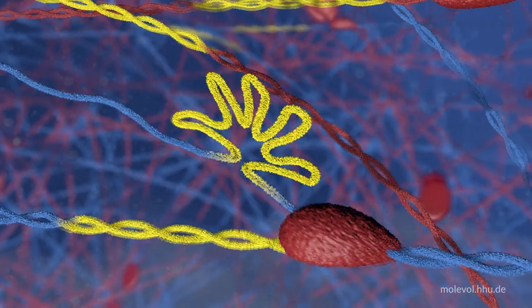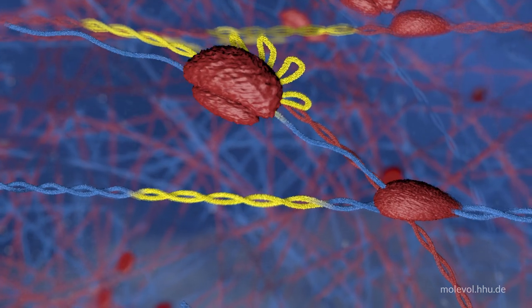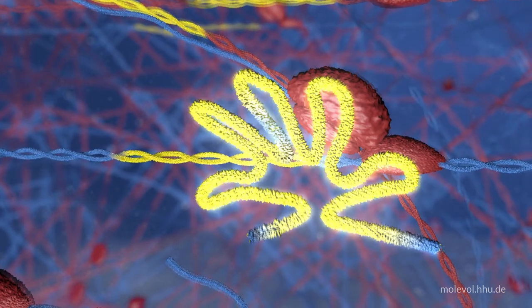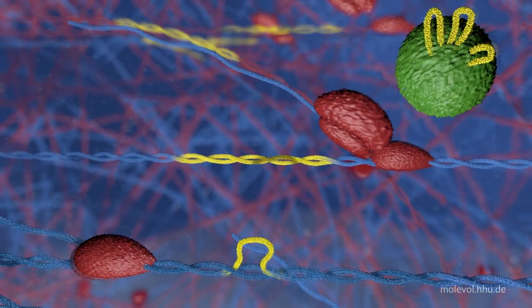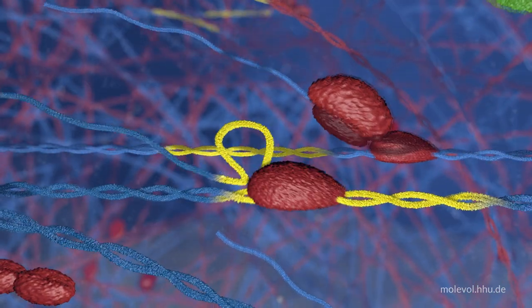But during eukaryote origin, these group 2 introns underwent a fateful transition. They fragmented into smaller introns and splicing machines called the spliceosome, shown here in green. The transition to spliceosomes had a huge consequence. They are slow, slower than the ribosome.